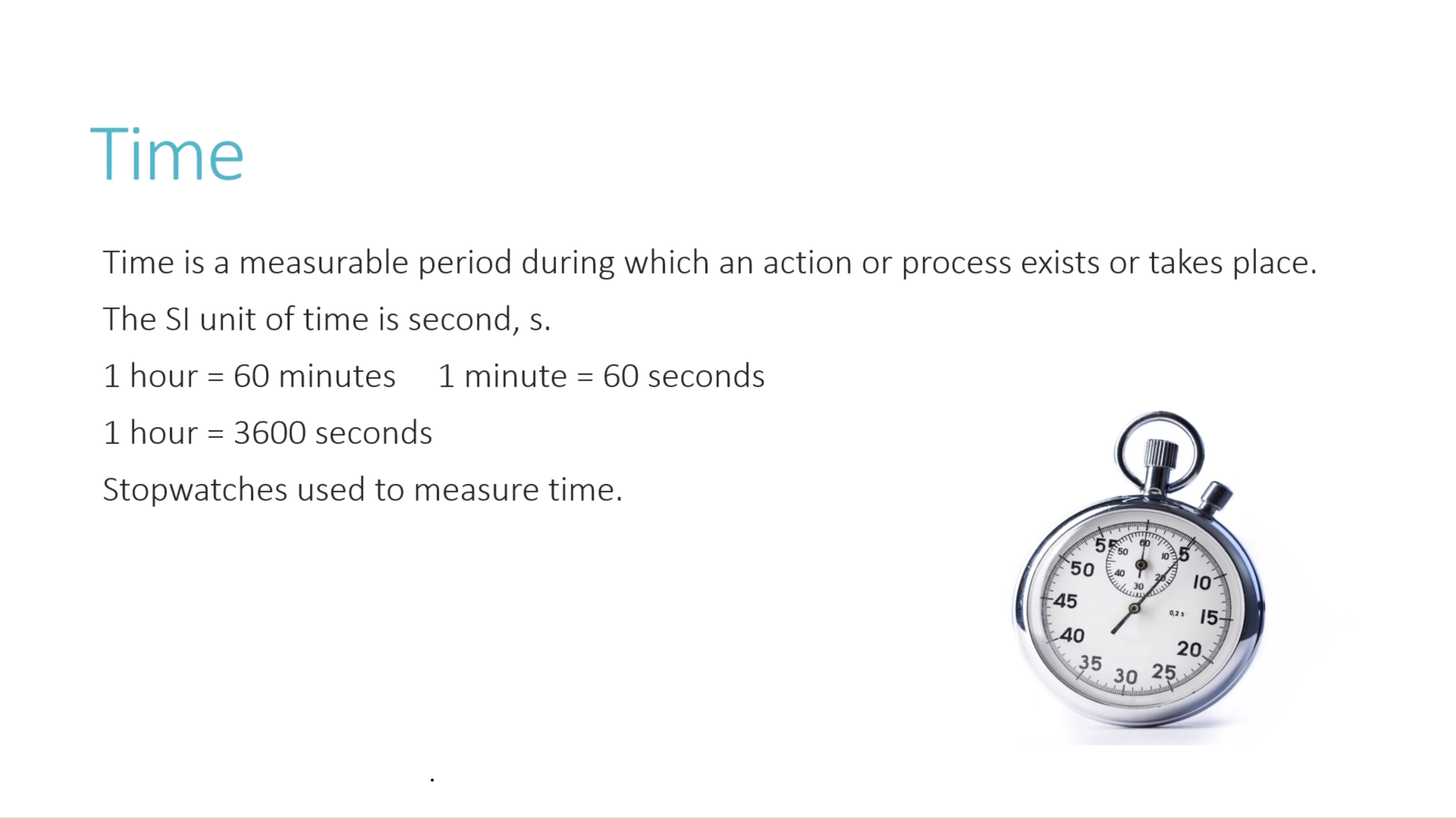Next is time. Time is a measurable period during which an action or a process exists or takes place. The SI unit of time is second. 1 hour is equal to 60 minutes, 1 minute is equal to 60 seconds, then 1 hour would be equal to 60 multiplied by 60, that makes 3600 seconds. Stopwatches are used to measure time.